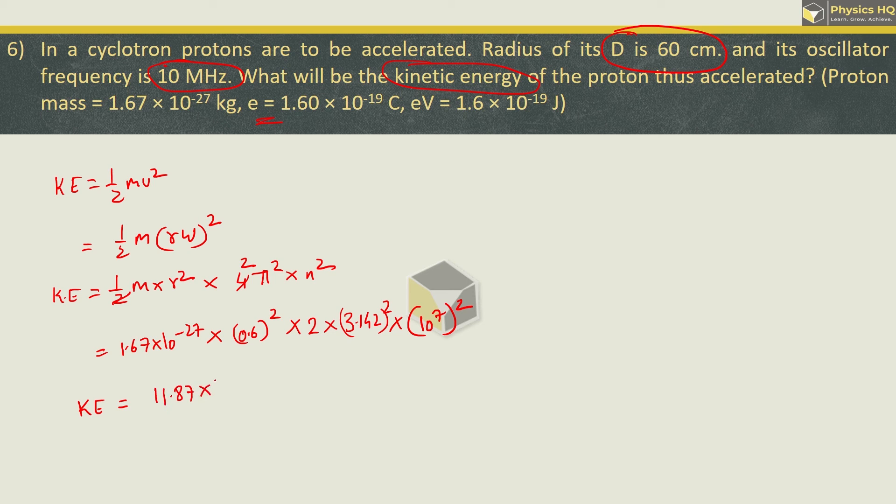When you simplify this using log, you get value 11.87 × 10⁻¹³ joule. You can convert this into electron volt by dividing it by 1.6 × 10⁻¹⁹. So finally we have the answer as 7.419 × 10⁶ which is mega electron volt as the kinetic energy.